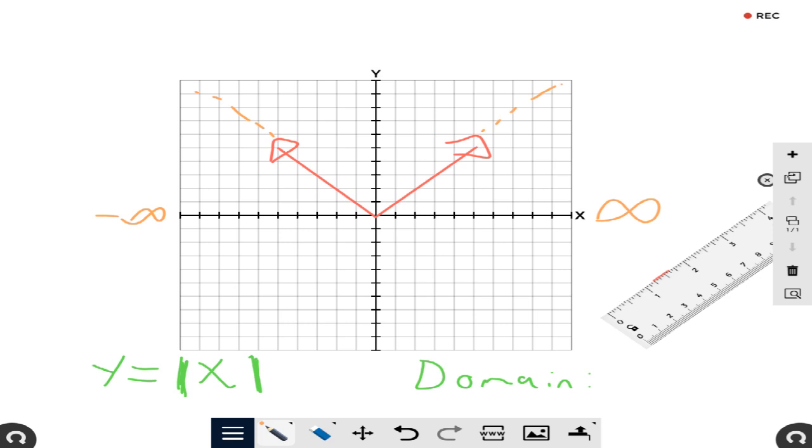In other words, my domain is x from negative infinity—it's always parentheses—all the way to infinity. I can also write all real numbers.